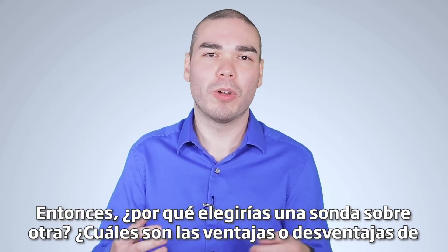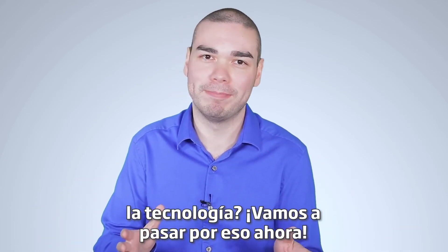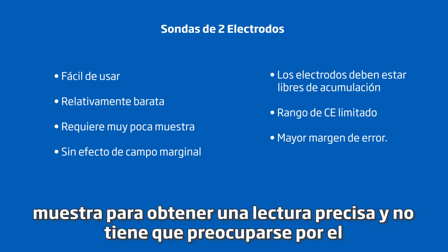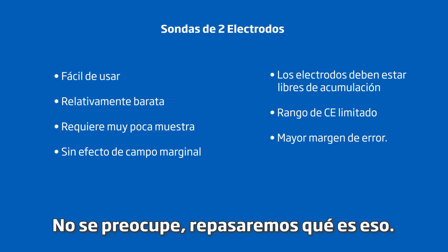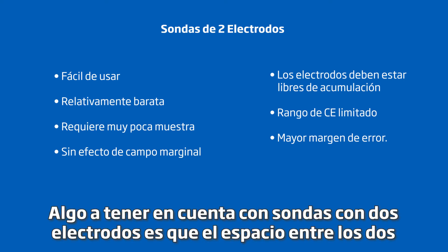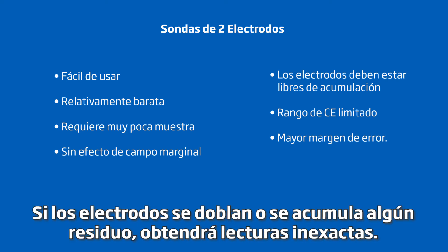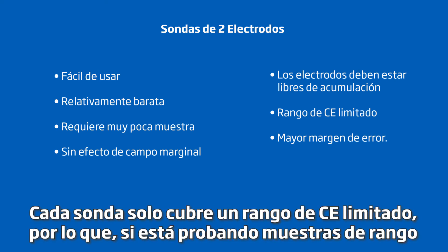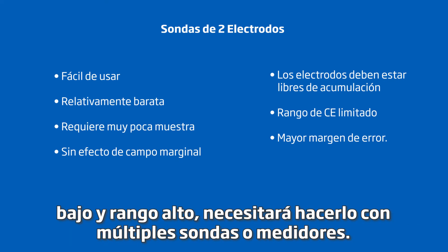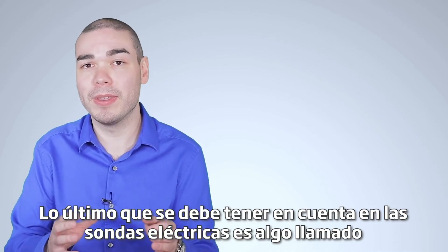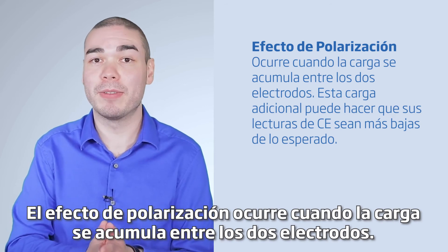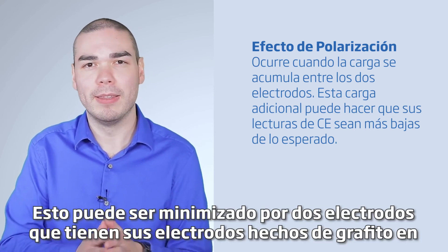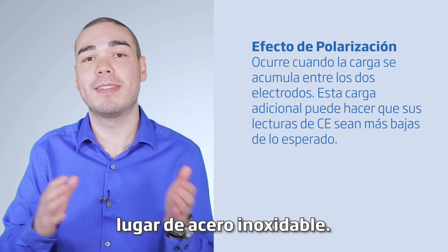So why would you choose one probe over another? Two electrode probes are easy to use, relatively inexpensive, require very little sample to get an accurate reading, and you don't have to worry about the fringe field effect. However, the space between the two electrodes has to be stable — if the electrodes get bent or a residue builds up, you will get inaccurate readings. Each probe only covers a limited EC range, so if you're testing low-range and high-range samples, you will need to buy multiple probes and or meters. Also be aware of the polarization effect, which happens when charge builds up between the two electrodes, causing EC readings to be lower than expected. This can be minimized by using electrodes made out of graphite instead of stainless steel.